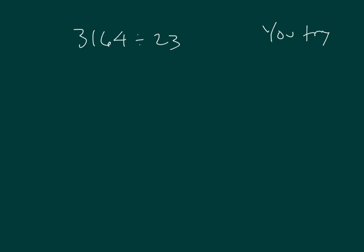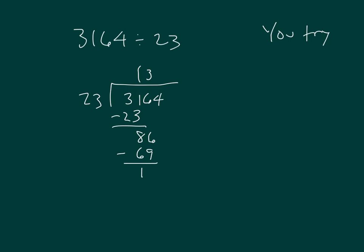Okay, it's your turn to try: three thousand one hundred sixty-four divided by twenty-three. You start with the thirty-one hundreds, where it goes in once. One times twenty-three is twenty-three. And thirty-one minus twenty-three is eight. Bring down the six — that looks like it would go in three times, because three times twenty-three is sixty-nine. And then do our subtraction there to come up with one hundred seventy-four. When we bring down the ones.